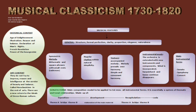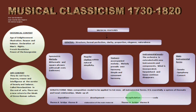Talking about the sonata, the sonata form was the main composition model to be applied to the first movement of instrumental forms. It is essentially a system of thematic and tonal relationships, made up of: exposition — theme A, bridge, theme B; then a development, which is an elaboration of the main material; recapitulation — again theme A, bridge, theme B; and last of all, the coda.